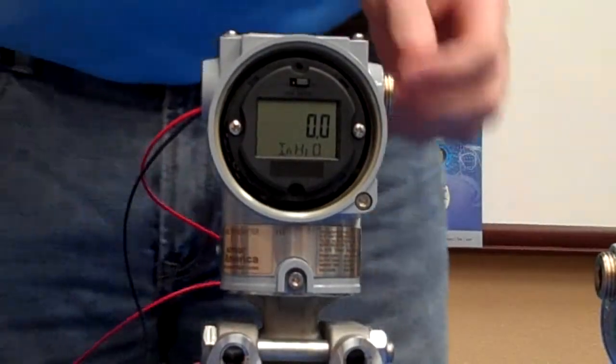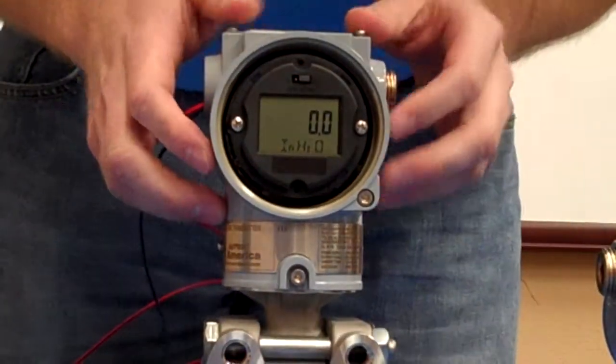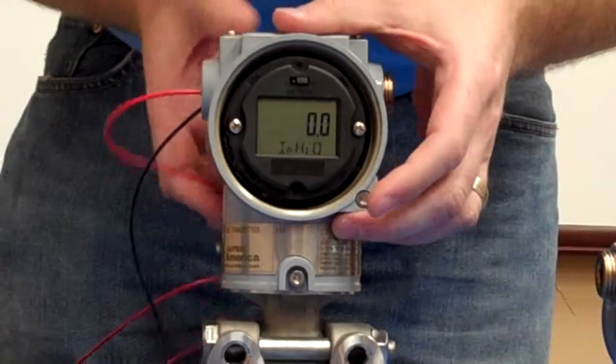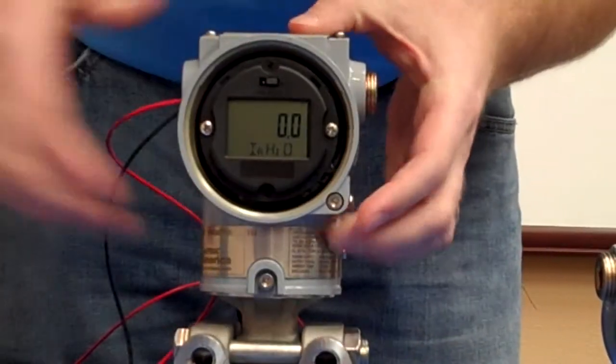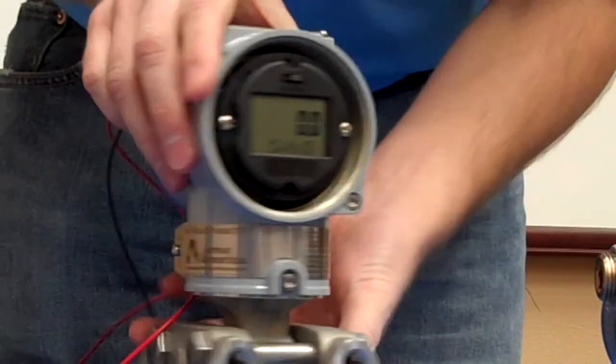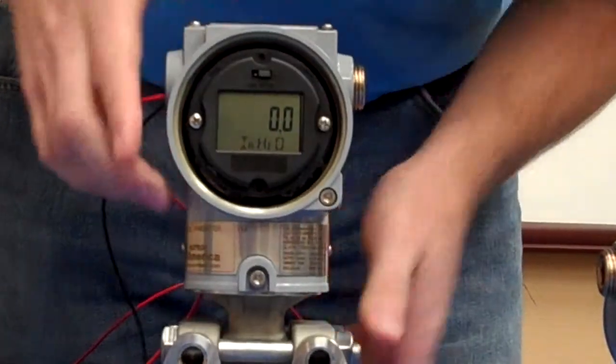The housings themselves share some similarities. These screws here and in the back can be loosened to allow the unit to rotate.